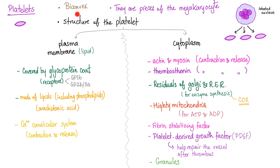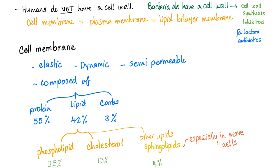As you know from previous videos, platelets are biconvex. They are pieces of megakaryocytes, they are not even cells. Structure of the platelets: we have the plasma membrane which is lipid and the cytoplasm. The cytoplasm has lots of stuff and the plasma membrane is covered by the glycoprotein coat which contains receptors. Receptors are proteins on the glycoprotein of the cell membrane. I've told you before in my physiology and biology lectures, the cell membrane is composed of proteins, lipids and carbohydrates. Where are the receptors? They are part of the protein of the cell membrane.